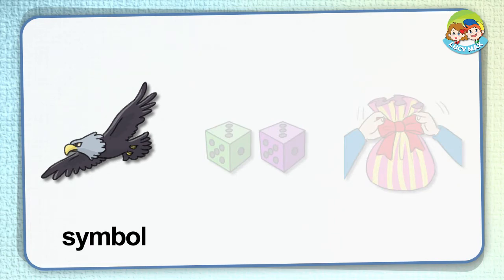Species. A species is a class of plants or animals. The class has almost the same look. A flock of birds are flying in the picture. They are the same species — they almost look the same.